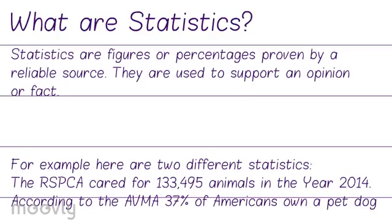Here are two different statistics. The RSPCA cared for 133,495 animals in the year 2014. The second statistic: according to the AVMA, 37% of Americans own a pet. Notice that I didn't just say 37% of Americans own a pet — I quoted where I got the information from, in this case the AVMA and the RSPCA.